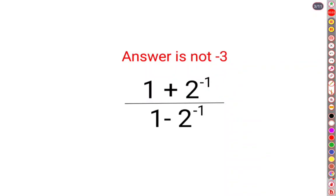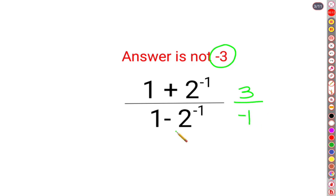Welcome everyone. A lot of people thought that the answer for this one was supposed to be minus 3, because 1 plus 2 is 3 and 1 minus 2 is minus 1 — when you do subtraction, the sign of the bigger number gets carried forward — so the answer is minus 3. No, that is incorrect.